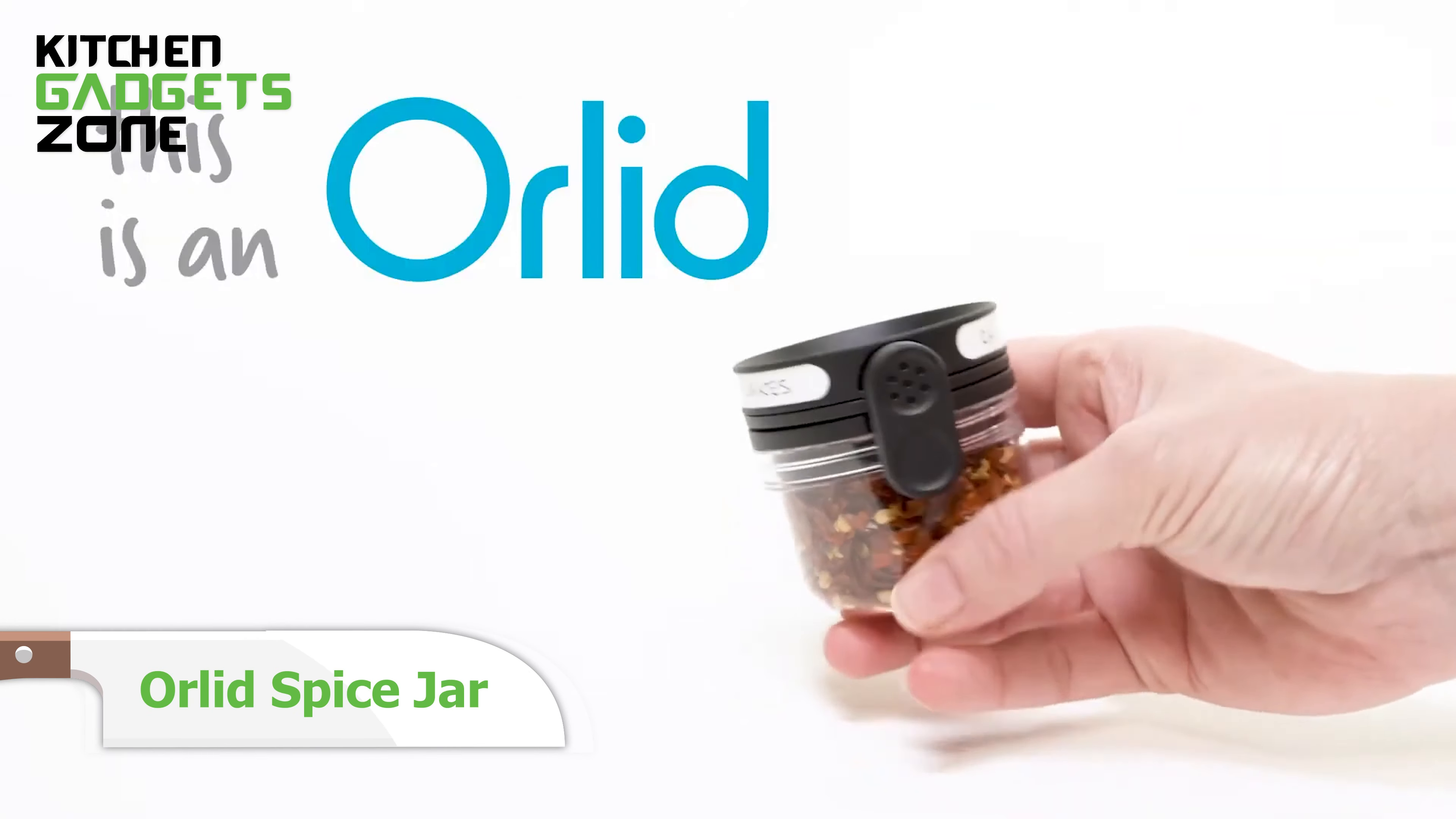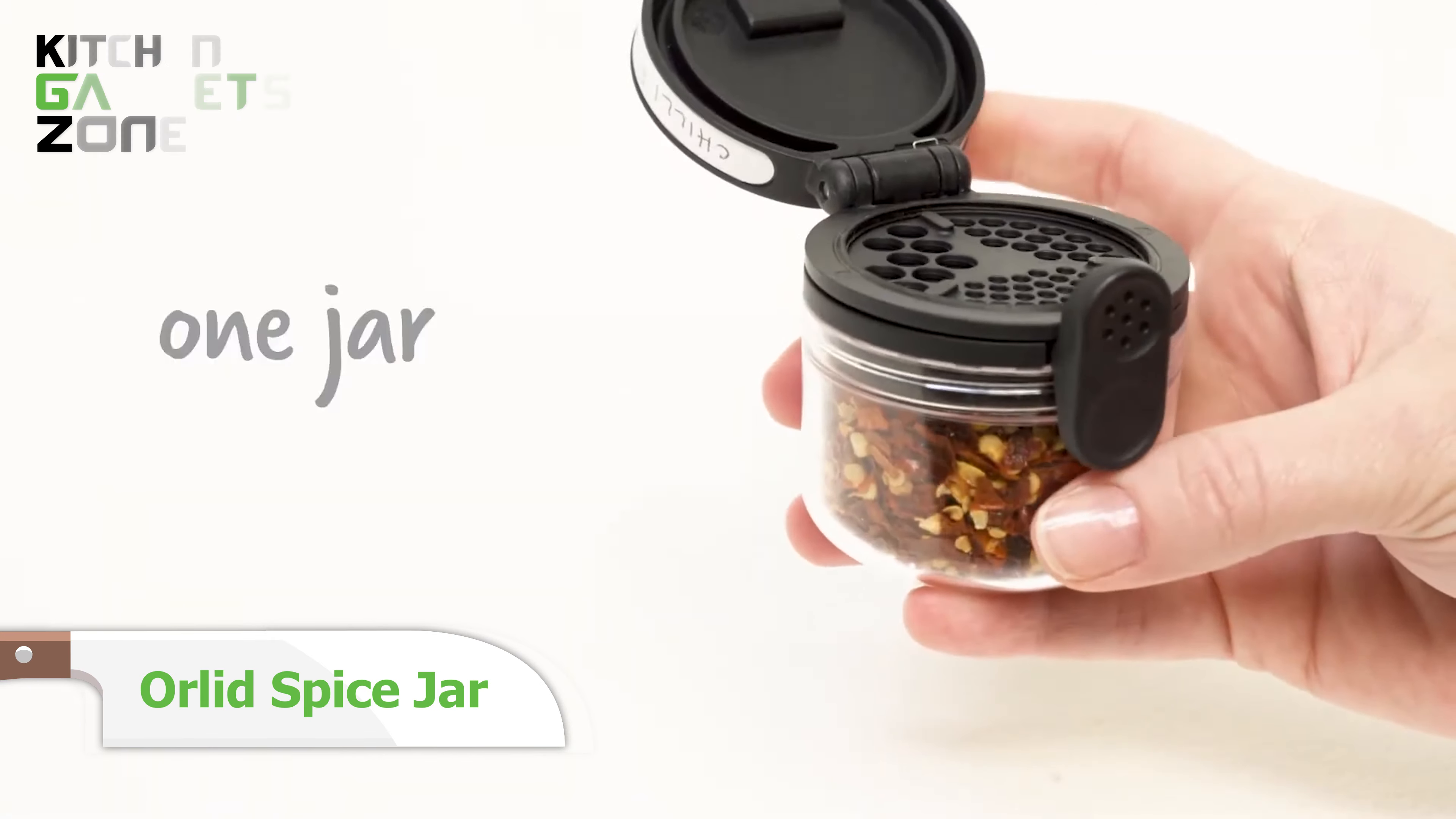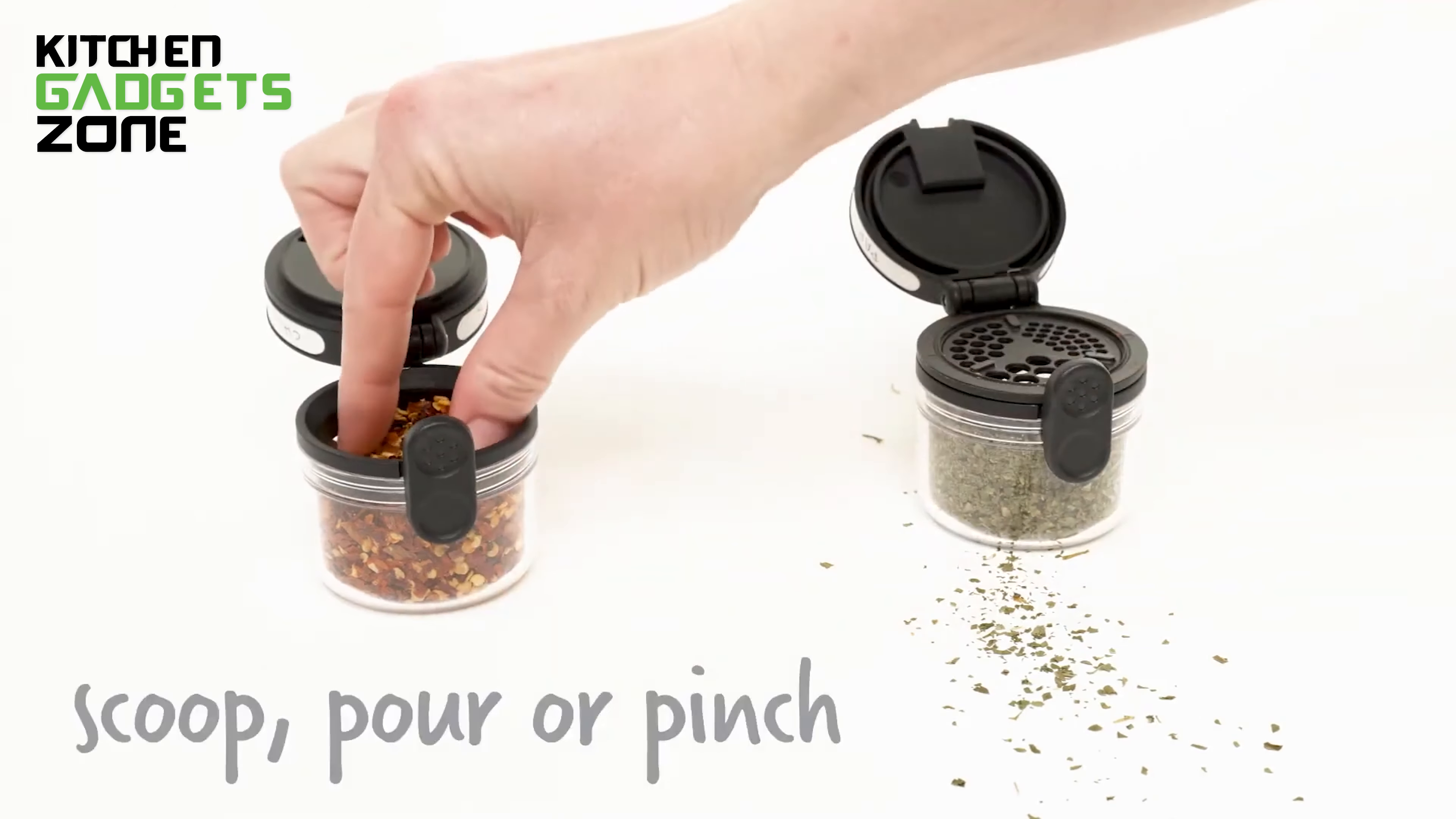Bland dishes? Be gone. The Orlid Spice Jar is here to bring flavor back to your kitchen. This ingenious gadget features a double-action lid that opens with a simple push of a button, giving you the option to flip it open for sprinkling or fully remove it for scooping, pouring, and easy refilling.